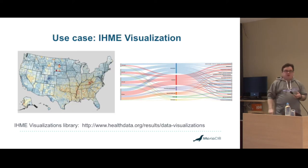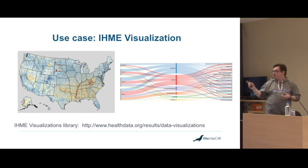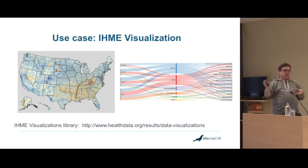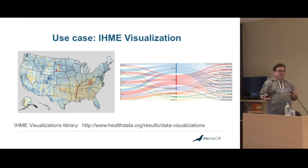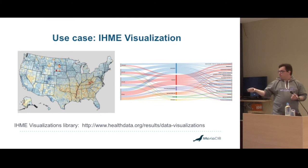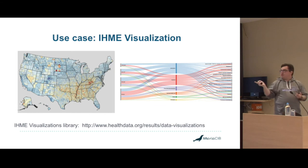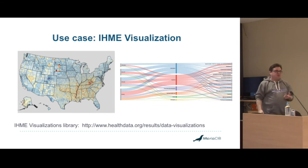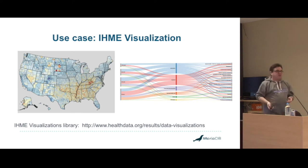One particular customer we have is IHME. They have health data and death records for millions and millions of people all over the planet, and they use this to work out trends on various illnesses. You can actually go to their website right now — just Google search for IHME. The website is live generated from a MariaDB ColumnStore instance, and you can view health maps and all sorts of interesting visualizations.